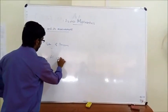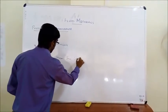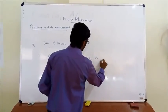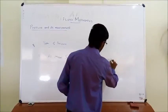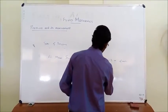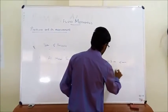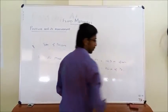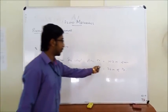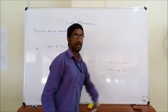At the mean sea level, atmospheric pressure is equal to 10.3 meters of water, and it can also be represented as 76 centimeters of mercury. Now let me explain how these values of 10.3 meters of water and 76 centimeters of mercury are obtained.